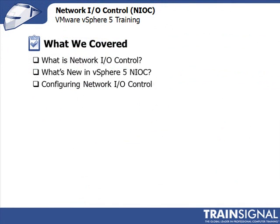That brings us back to the summary for this lesson covering Network I.O. Control. We started off by answering: what is Network I.O. Control, or NIOC? It's essentially quality of service for the virtual network, only available in vSphere Enterprise Plus, and requires a distributed virtual switch. Network I.O. Control has predefined network resource pools for common virtual infrastructure services, but new in vSphere 5, you can create your own user-defined network resource pools. Thanks for watching this lesson on vSphere 5 Network I.O. Control.